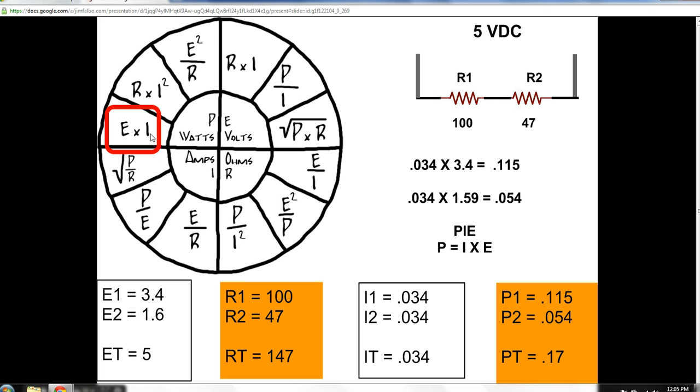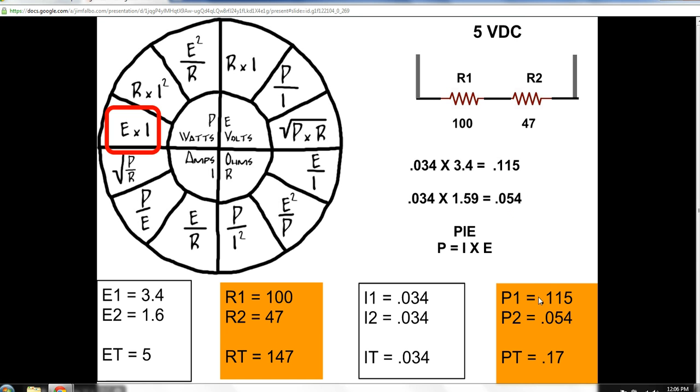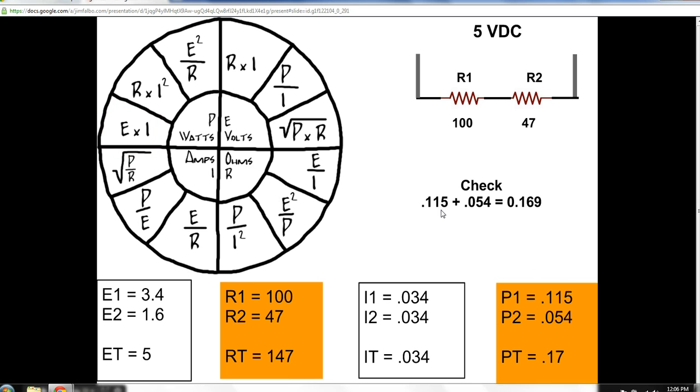Same thing here. It's just reversed voltage times current. Same as current times voltage. So, we apply that formula and solve for wattage in both loads. And then we're going to check that. We're going to add our wattages together and see if it equals our calculated total wattage. Again, if we round it up, it sure does. So, we know that we did this correctly. Thank you.